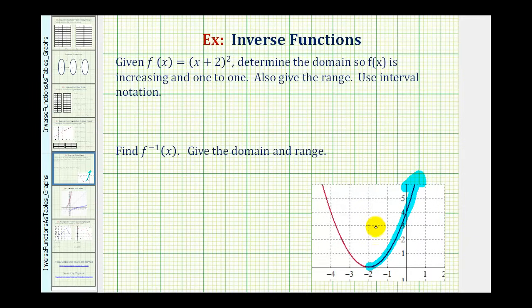So now we'll determine the domain and range if we only want this half of the graph. Well the domain is a set of all possible x values. So if we project this graph onto the x axis, notice how the domain would be from negative two to the right or from negative two to infinity and it would include the vertex so we'll include negative two in the domain.